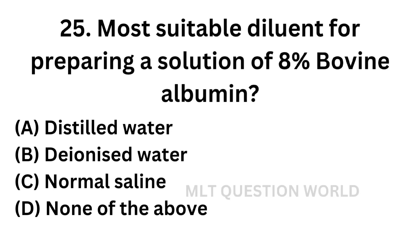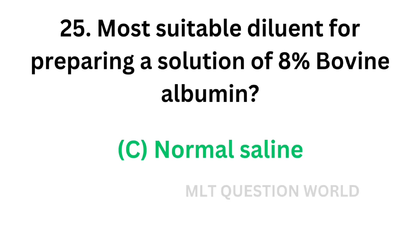Question No. 25. Most suitable diluent for preparing a solution of 8% bovine albumin. Option A: Distilled water. Option B: Deionized water. Option C: Normal saline. Option D: None of the above. The correct answer is Option C — normal saline. Most suitable diluent is normal saline for preparing 8% bovine albumin.